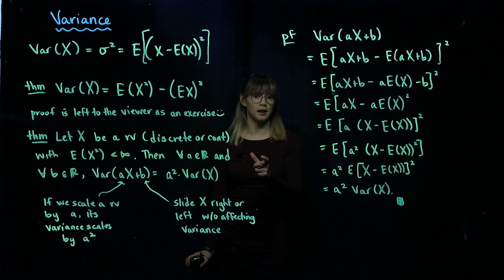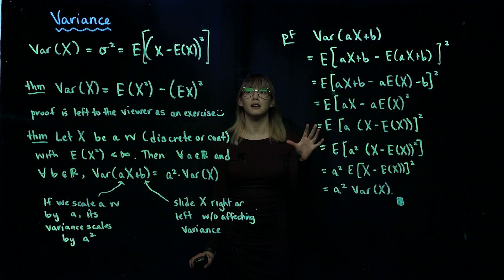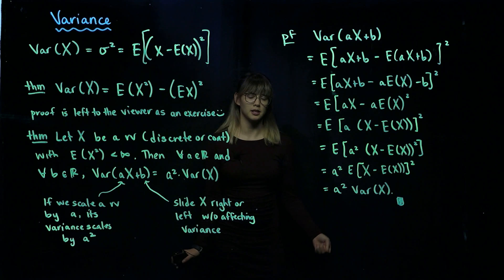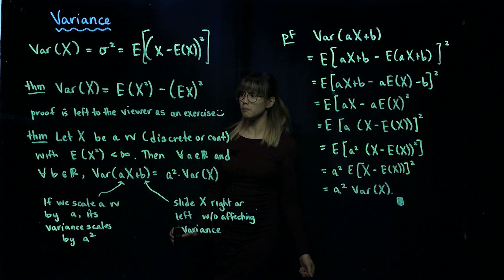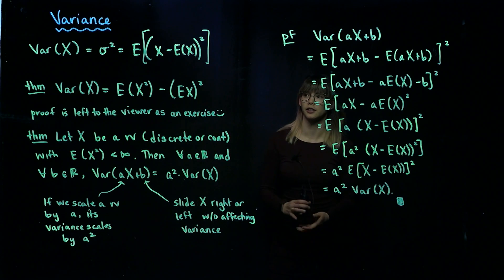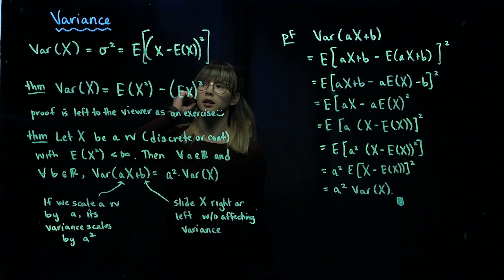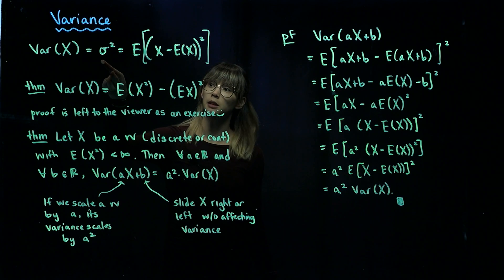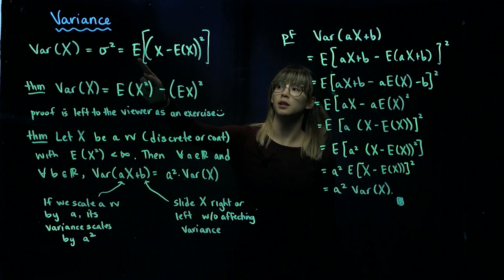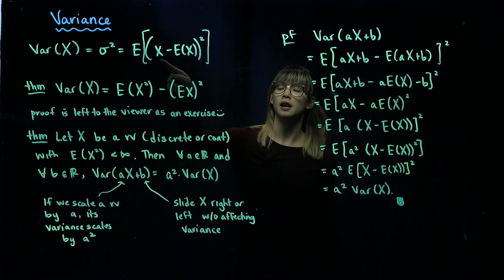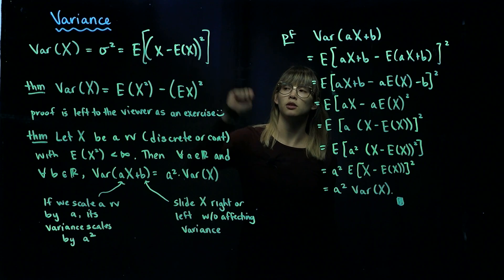because the standard deviation is in the same units as your original data. But in probability we're going to talk about variance because it just has nicer properties. So the variance of X, which we usually denote Sigma squared, is equal to the expected value of the quantity X minus its mean, squared.